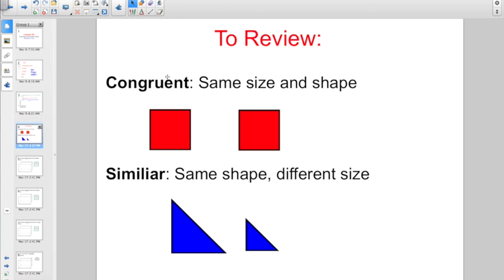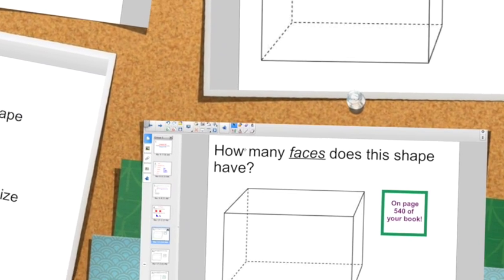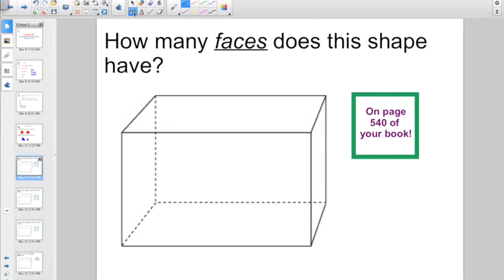And a little bit more review. Remember these two words, congruent and similar. Anytime you're dealing with shapes, they're probably going to throw these terms at you. Congruent means exactly the same size and shape. Similar means exactly the same shape, but different sizes.